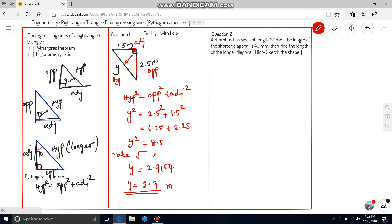In question 2, a rhombus has sides of length 52 mm. The length of the shorter diagonal is 40 mm. Then, find the length of the longer diagonal. Hint, we have to make the diagram first. We can draw the rhombus first of all.